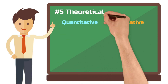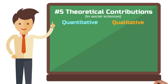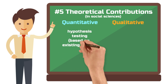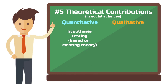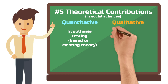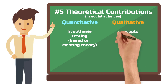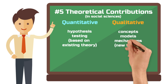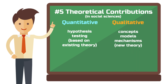Difference 5: the theoretical contributions. Quantitative research typically contributes to theory by testing propositions or hypotheses. Qualitative research typically contributes to theory by introducing new concepts, models, or mechanisms. Both apply to social science theory.